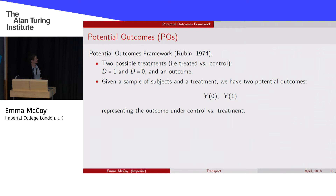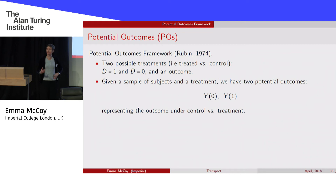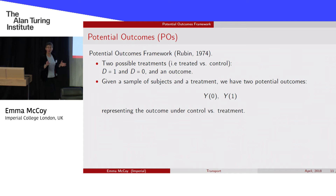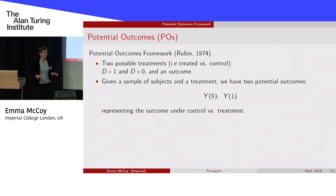I think this framework should be taught at GCSE. Even in our first and second year statistics courses at Imperial we don't teach this — we just teach generalized linear models and regression, which are all models for correlation, not causation. Rubin, a very famous statistician, in 1974 introduced this potential outcomes framework — actually introduced earlier by Neyman, though I won't get into the arguments between statisticians about claiming theory. The Rubin-Neyman model is a very nice framework for thinking about these issues.